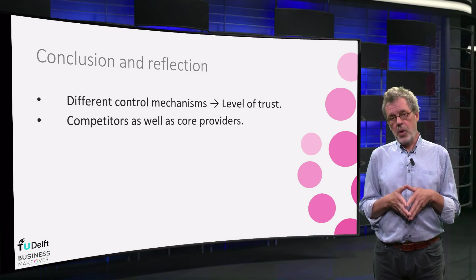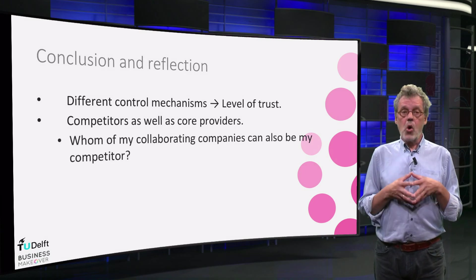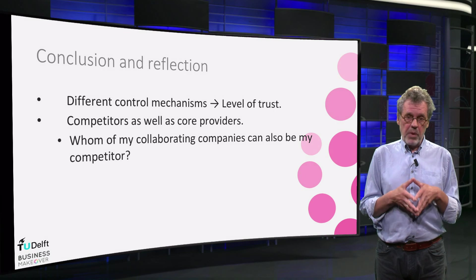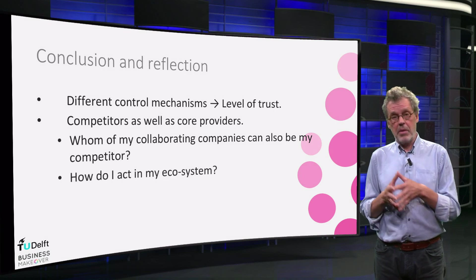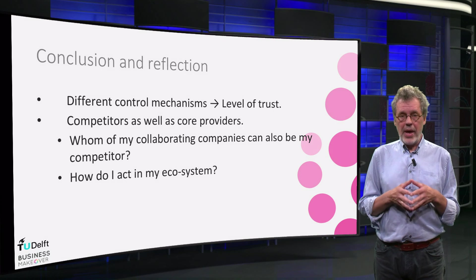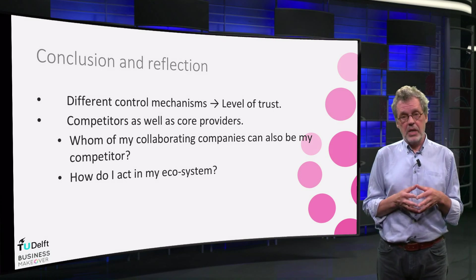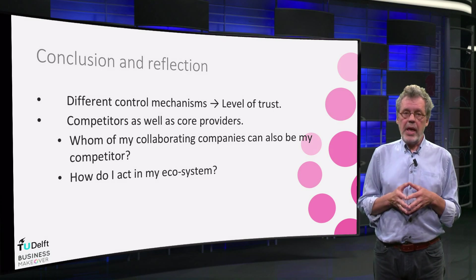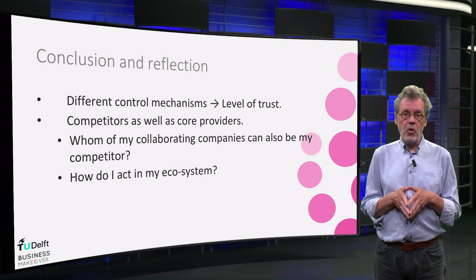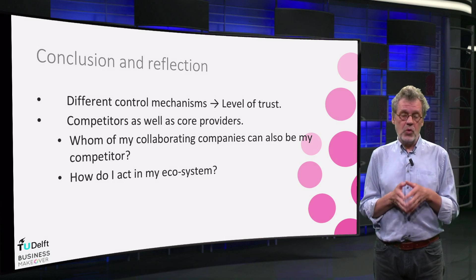It might be worthwhile to reflect on your own ecosystem and ask: Whom of my collaborating companies can also be my competitors? How do I act in my ecosystem? Do I care for value-capturing by my ecosystem partners — is their business model also positive? And how do I manage the ecosystem: based on trust and input control, or on behaviour control, like dominators tend to do?